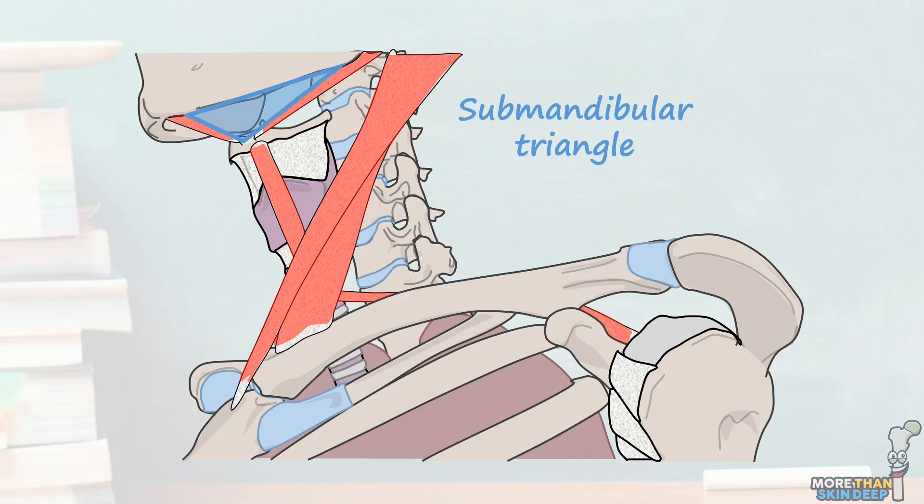The submandibular triangle is a region in the anterior triangle of the neck that lies just inferior to the body of the mandible, hence its name.